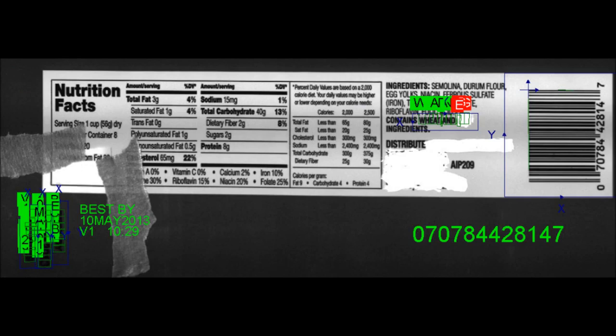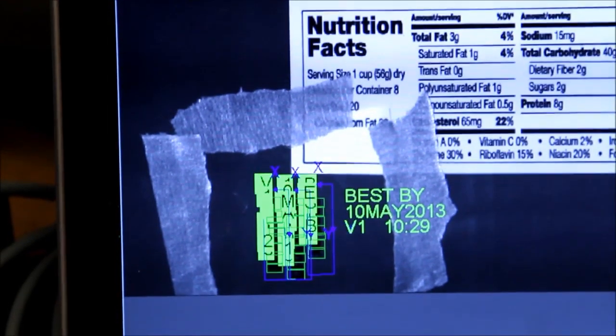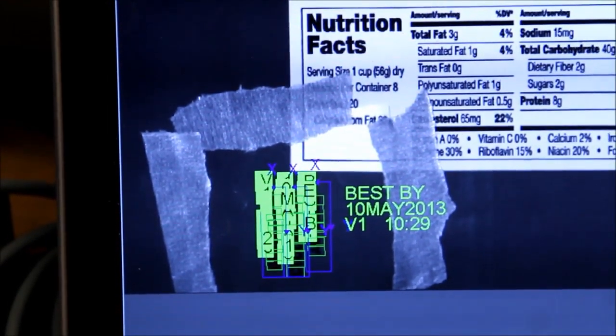This line scan camera is able to inspect the barcode, allergen information of wheat and egg, and the expiration date lot code on the other side of the label for presence and accuracy.